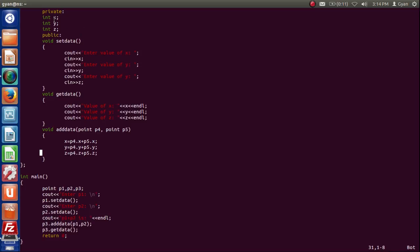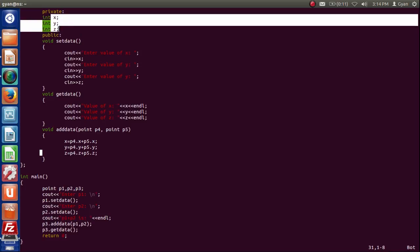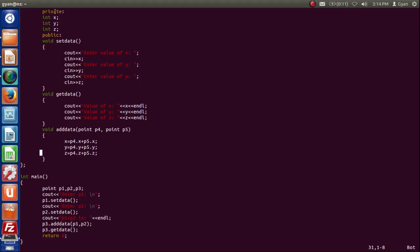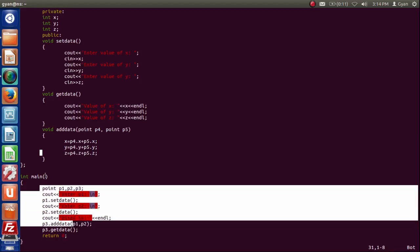That's why to hide these three x, y, z from main which will create less complexity for main. And what was the less complexity? Any change inside the set data, get data, main does not care about. This was the less complexity for main. So hiding those things by making them private makes your program less complex.